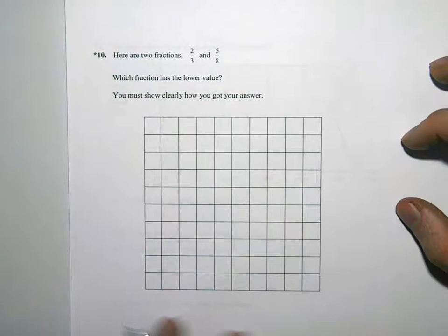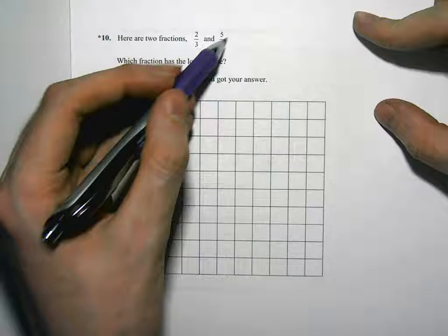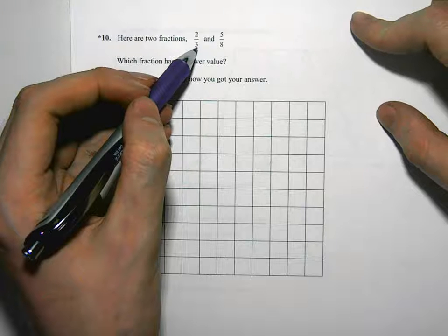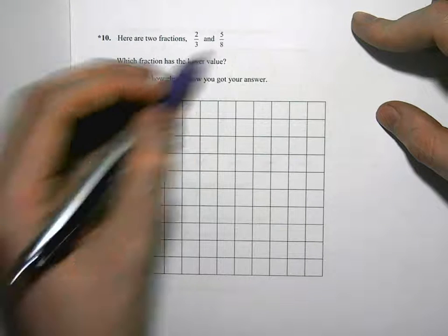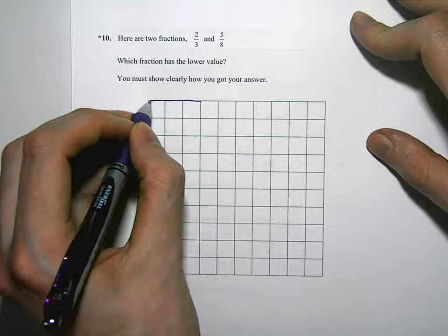So it's given this big grid here. I think the easiest way to do this is, we're thinking here, 2 thirds, 5 eighths. Look at the bottom numbers, look at the denominators. So we've got 3 and an eighth. So I think the best way to do this is just draw a grid that's 3 by 8.